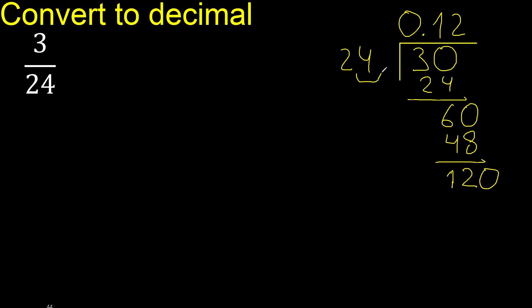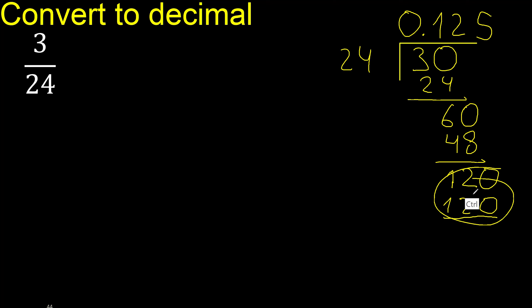24 multiplied by what number? Multiplied by 5 is exactly 120. Subtract: 120 minus 120 is 0. Therefore, finish.